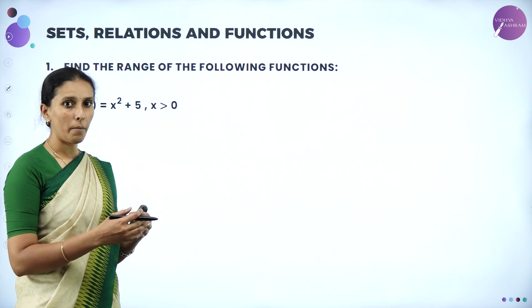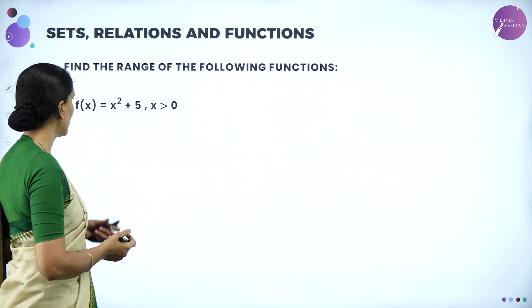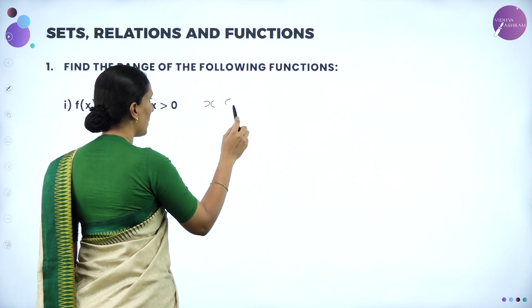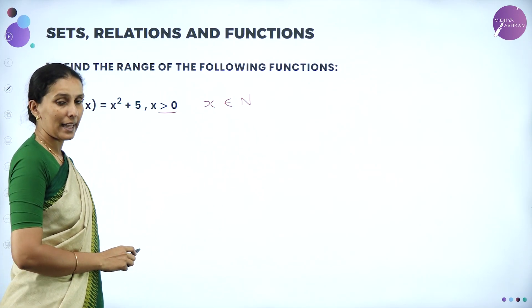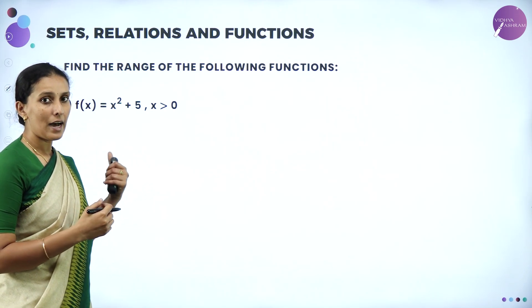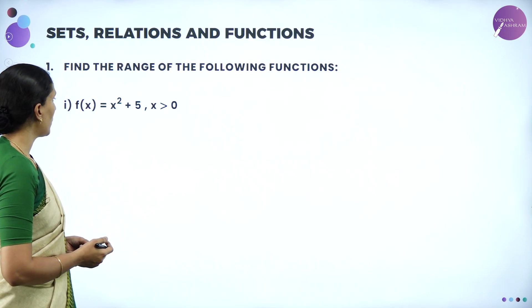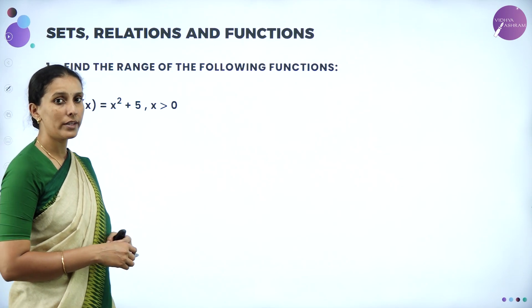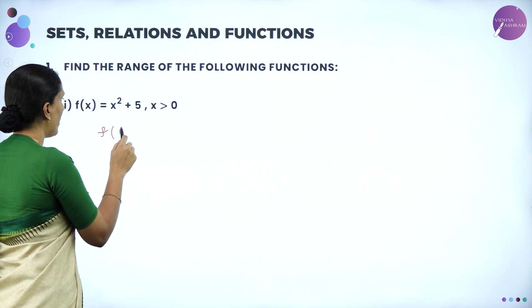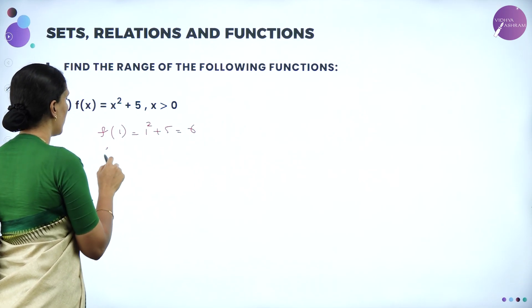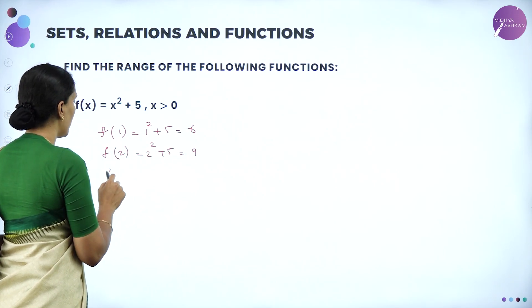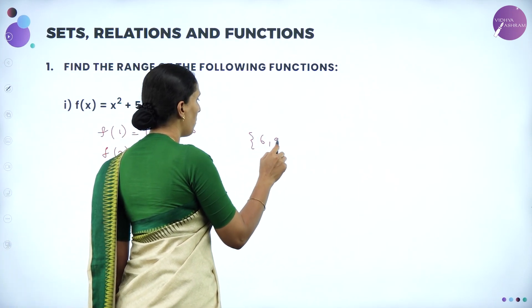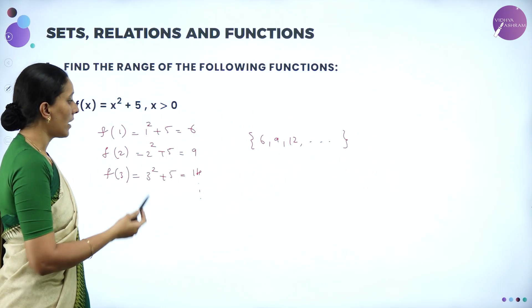Find the range of the following functions. For f(x) = x² + 5, where x > 0 (positive real numbers): f(1) = 1 + 5 = 6; f(2) = 4 + 5 = 9; f(3) = 9 + 5 = 14, and so on. The range of this function is {6, 9, 14, ...}. For f(x) = x² + 2x + 1, where x > 0: f(1) = 1 + 2 + 1 = 4; f(2) = 4 + 4 + 1 = 9; f(3) = 9 + 6 + 1 = 16. The range is {4, 9, 16, ...}.